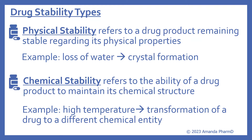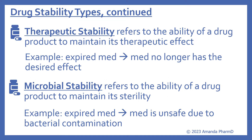Now we'll look in more detail at the drug stability types. Physical stability refers to a drug product remaining stable regarding its physical properties. For example, if you have a liquid medication and it has loss of water, that can lead to crystal formation — that would be an issue with its physical stability. Chemical stability refers to the ability of a drug product to maintain its chemical structure. If a drug is exposed to high temperature, it can have transformation into a different chemical entity — it can cause a chemical reaction that will actually change the drug chemically. Therapeutic stability refers to the ability of a drug product to maintain its therapeutic effect. An example would be an expired medication — it would no longer have its desired effect, like it has lost its therapeutic stability.